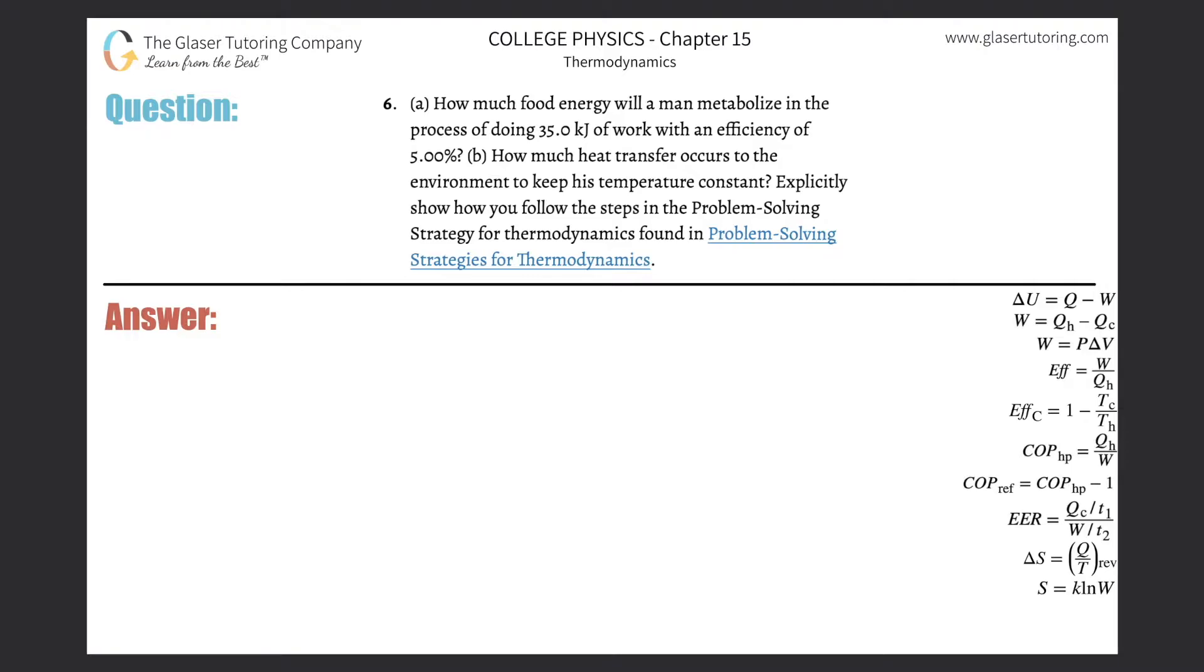Number six, letter A: How much food energy will a man metabolize in the process of doing 35 kilojoules of work with an efficiency of 5%? Check out number five, where I go through an intuitive explanation of this whole efficiency idea. I'm just going to calculate it from here, and if you want to understand where it comes from, check out number five.